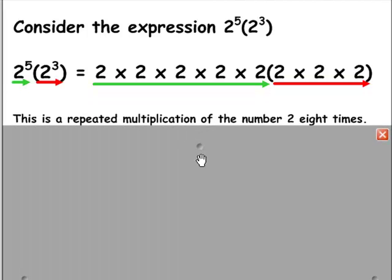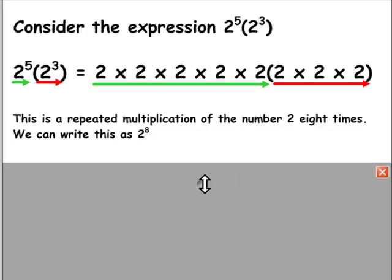Now, this is a repeated multiplication of the number 2 eight times. Since there are 8 terms, we can write this as 2 to the power of 8.